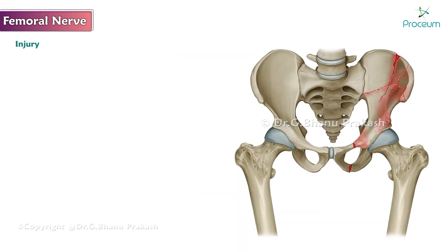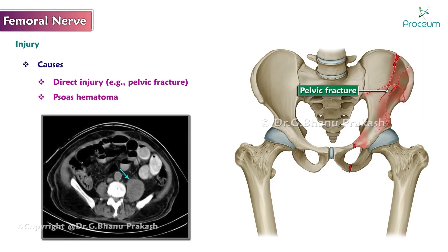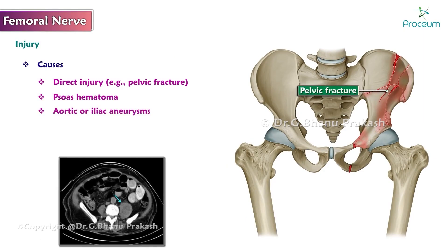Femoral nerve injury. Injury to the femoral nerve can be caused by direct injury — for example, pelvic fracture — prolonged pressure on the nerve due to psoas hematoma, aortic or iliac aneurysms, or tumors. It may also be iatrogenic.